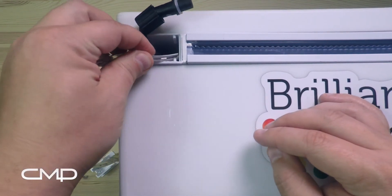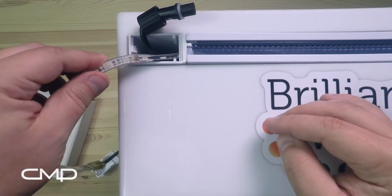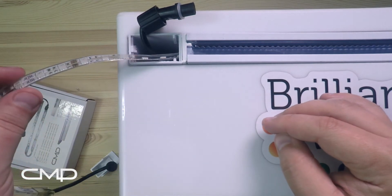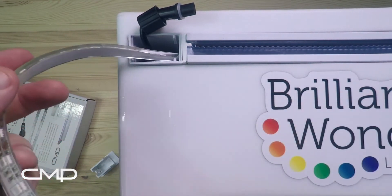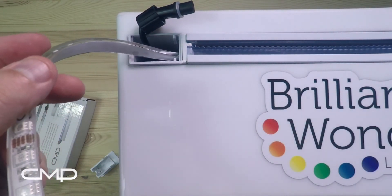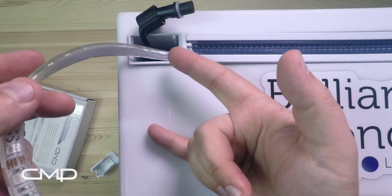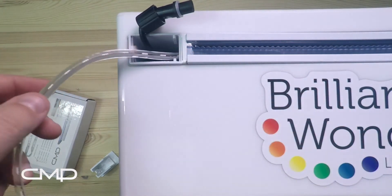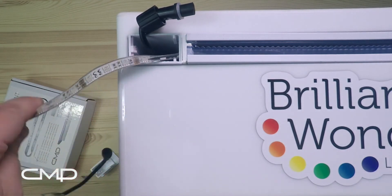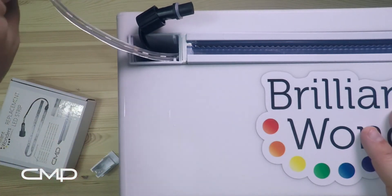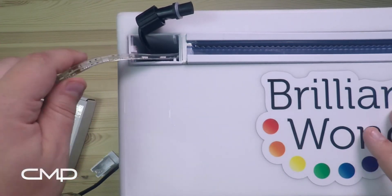When you slide it through, one of the most important things—and this is where we see a lot of breakage—is you don't want to pull the LED strip this way towards yourself, because that starts to stress the LEDs and you can break it and it won't work. You can bend it this direction, you can bend it even in this direction up and down, but you never want to do it side to side.